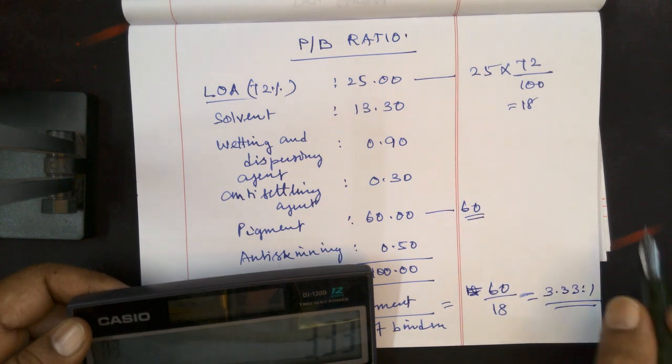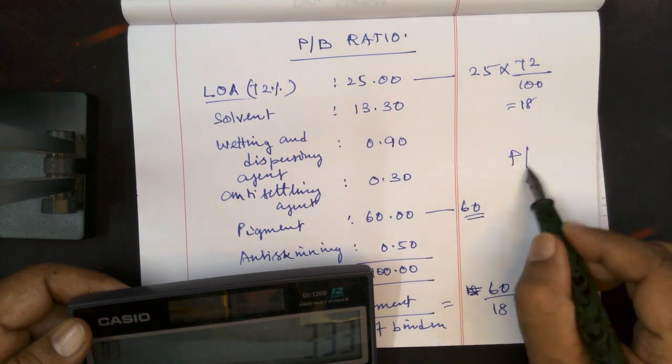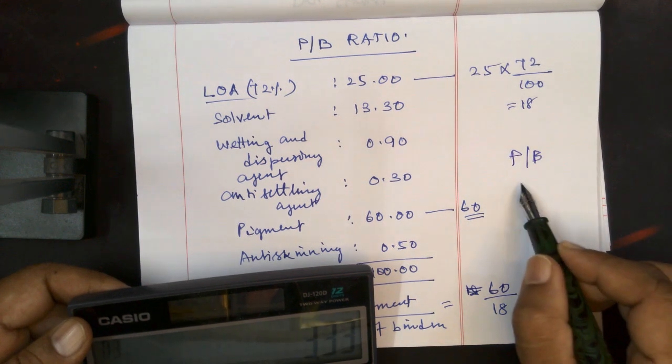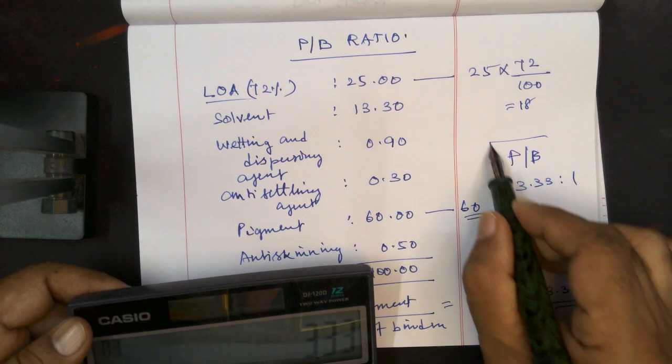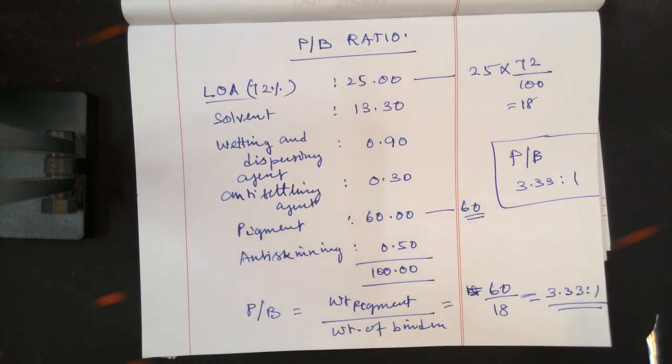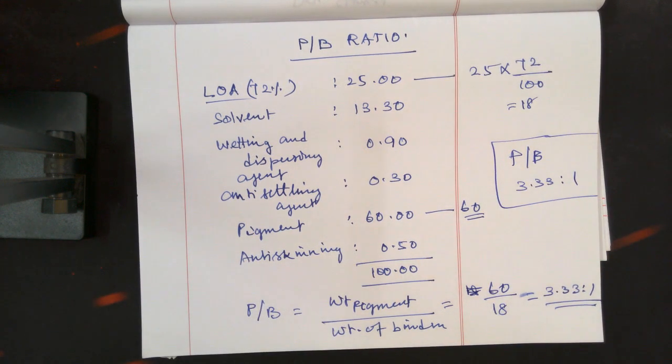So you can declare pigment-binder as a ratio 3.33 to 1. Okay, so this is the way you have to calculate the pigment-binder ratio.